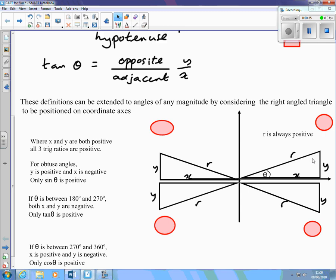So starting with this case, which is the one I've already considered, where x and y are both positive, sine theta, y over r, is positive. Cos theta, x over r, is also positive. They're all positive in that quadrant.